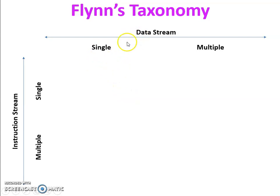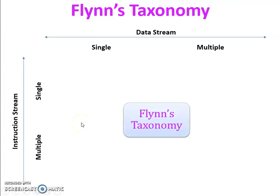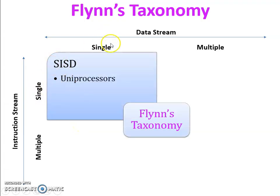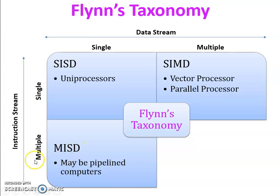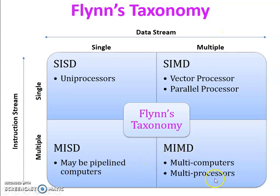Flynn's taxonomy has four categories: single instruction single data (SISD), whose application is uniprocessors; single instruction multiple data (SIMD), whose applications are vector processors and parallel processors; multiple instruction single data (MISD), which may be pipeline computers; and multiple instruction multiple data (MIMD), which covers multi-computers and all multiprocessors.